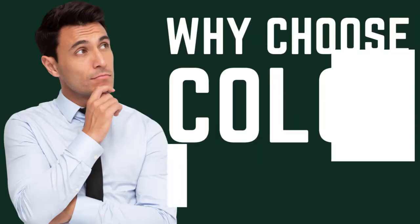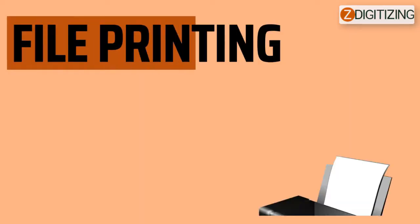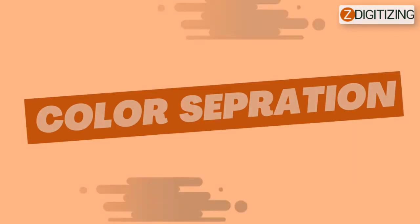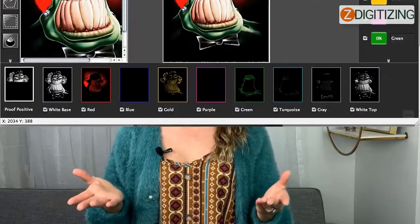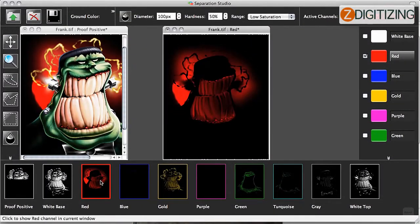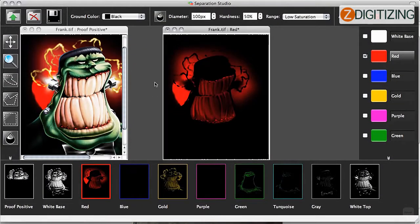Why choose color separation? The goal of the color separation process is to prepare the file for printing. The type of color separation process used is determined by the photo and the surface it would be printed on. Color separation software divides photos into the individual components needed to recreate them.